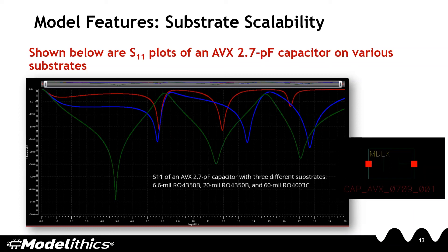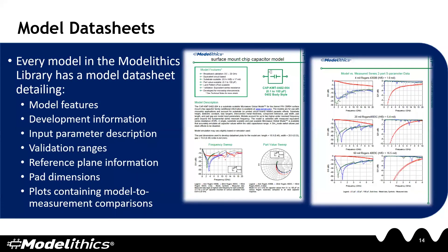Every model in the Modelytics library comes with a data sheet. The data sheets include information like model features, development information, a description of the input parameters, validation ranges, reference plane information, solder pad dimensions, as well as plots containing comparisons of modeled and measured data.